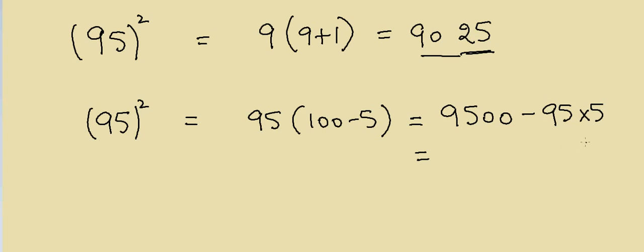It's 500 minus 25, which is 475. Then you subtract it from 9500, which gives you 9025.